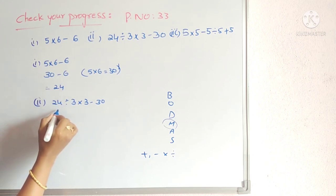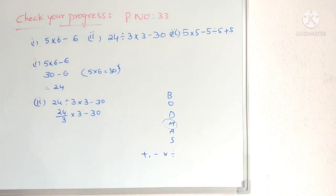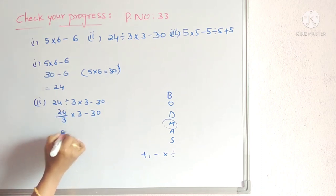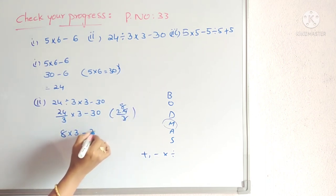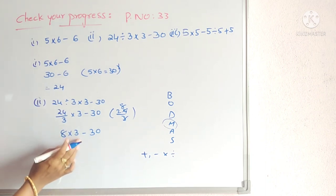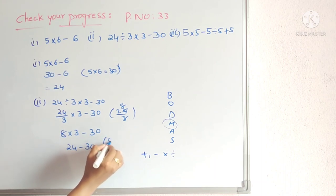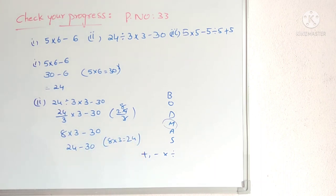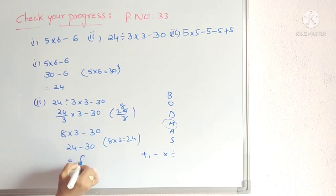So 24 ÷ 3 × 3 − 30. First do the division: 24 ÷ 3 = 8. So we get 8 × 3 − 30. Now multiplication: 8 × 3 = 24. Then 24 − 30: subtract small from big, 30 − 24 = 6, and the sign before the big number is minus, so the answer is −6.